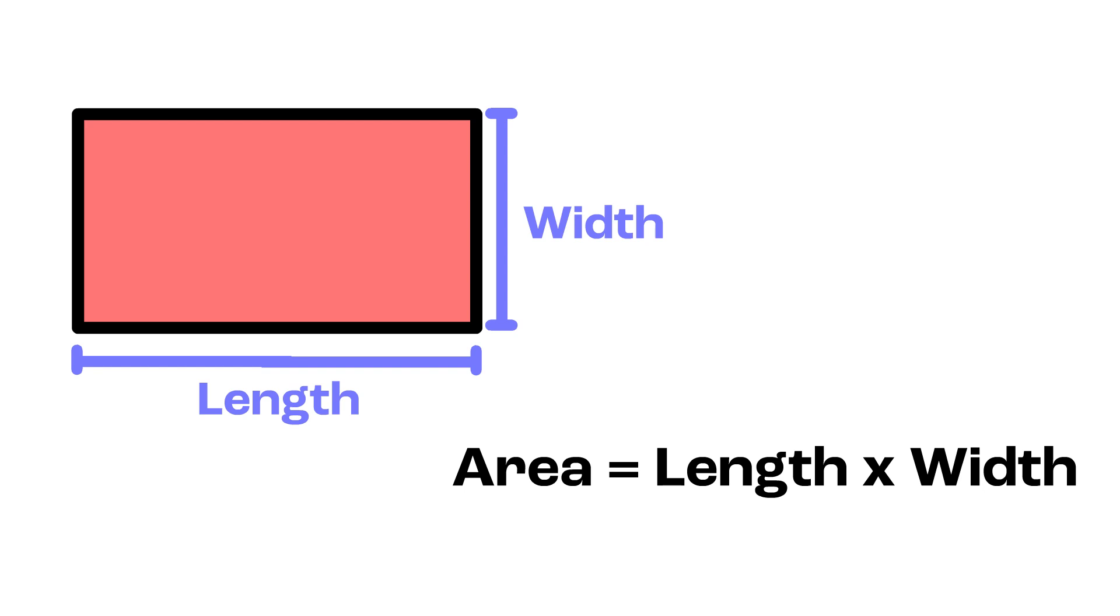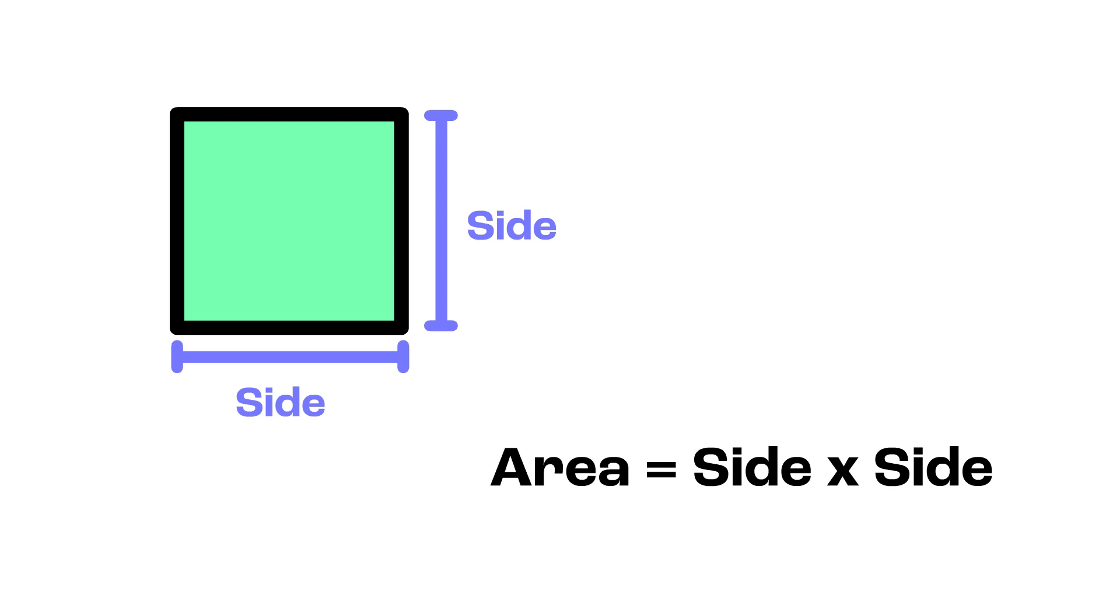The same idea applies to the formula of a square. But, because all sides of a square are equal, then we can say that the area of the square is side times side. So, we will use these formulas.